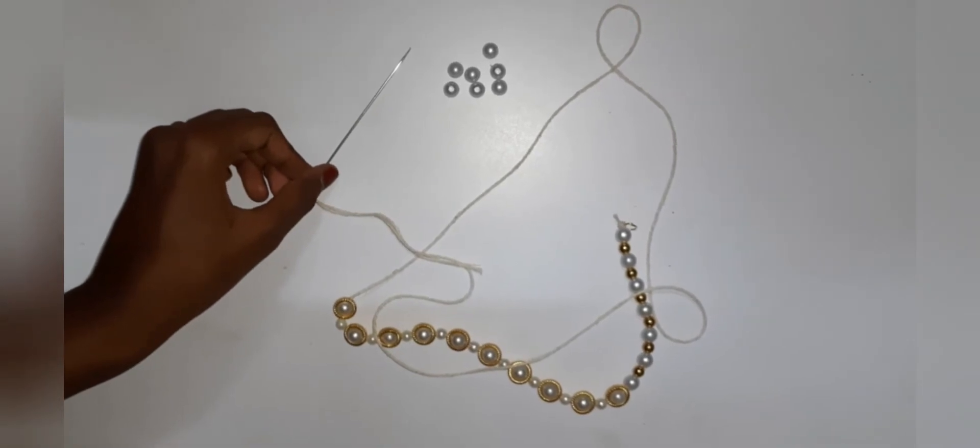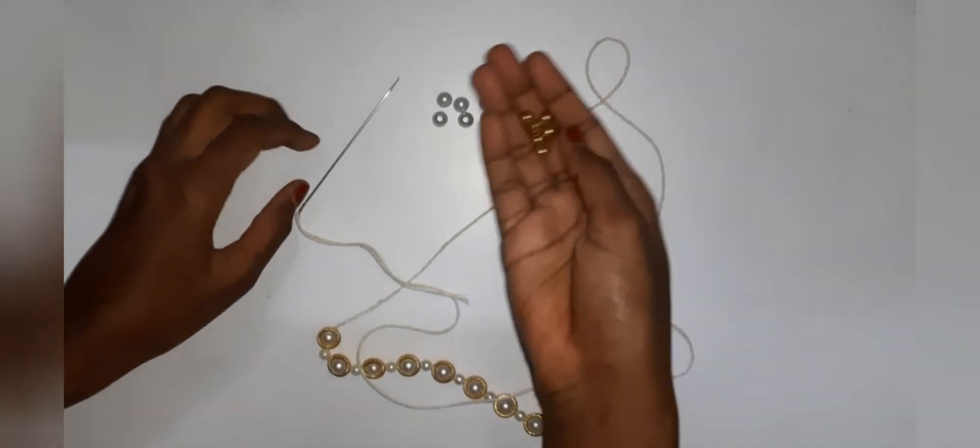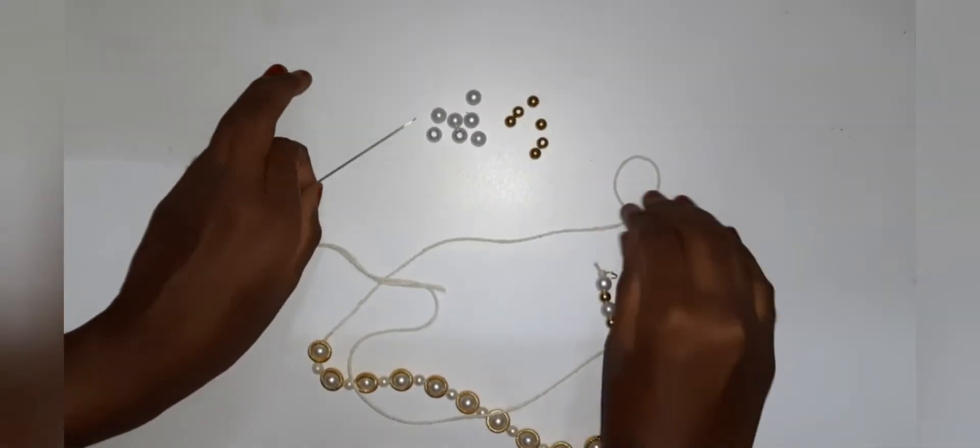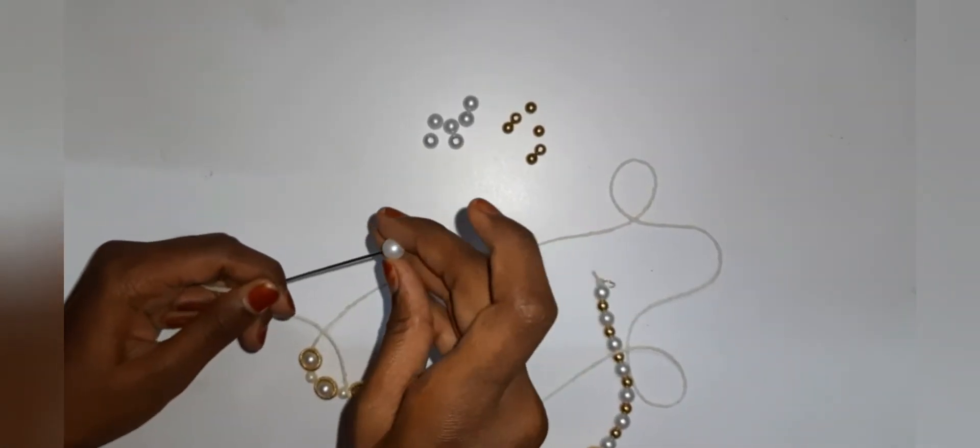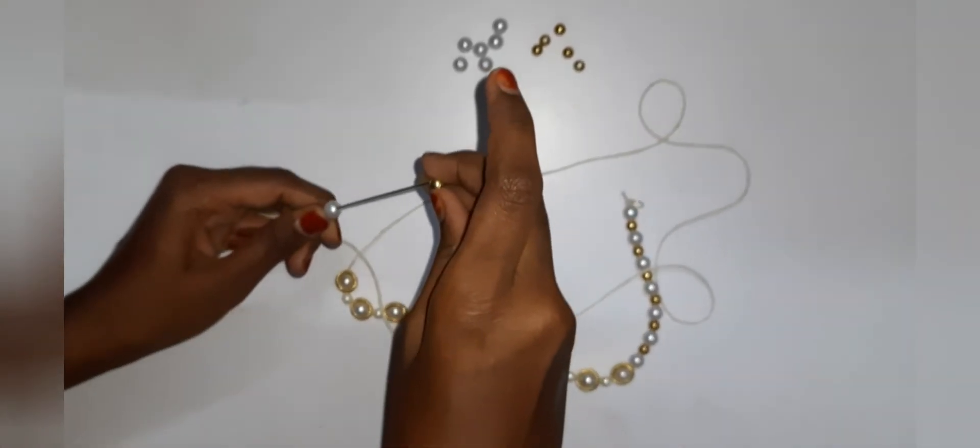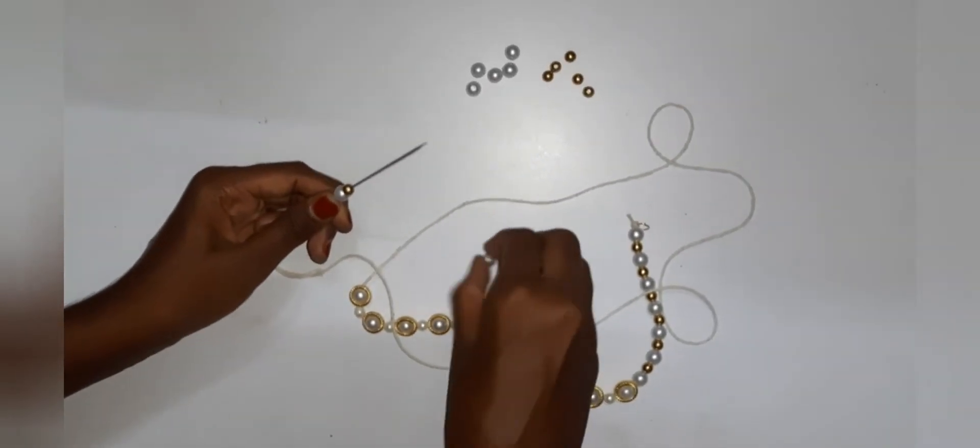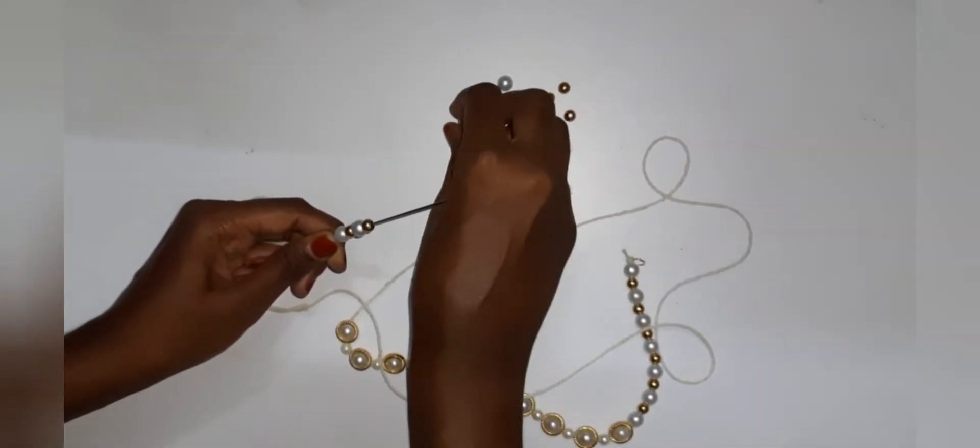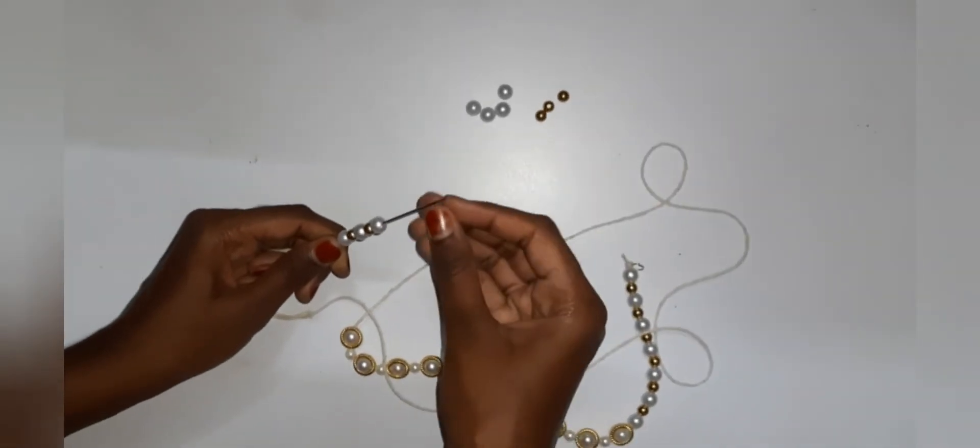And then do the same like this, and then same process repeats at first what you did. So first the white pearl, and then the gold color one, and again white color pearl and gold bead, white color pearl gold bead, white color pearl and gold bead.